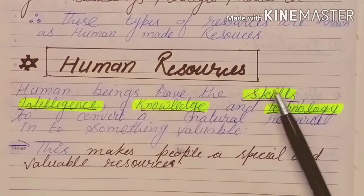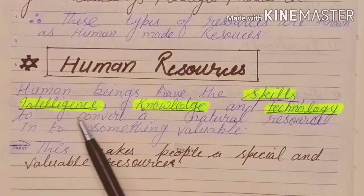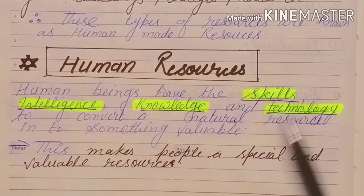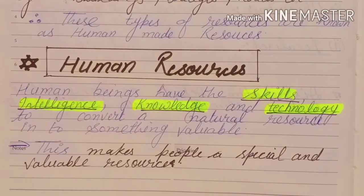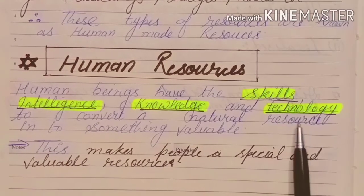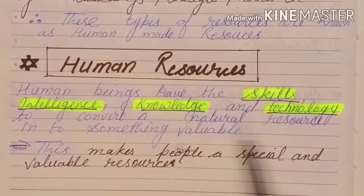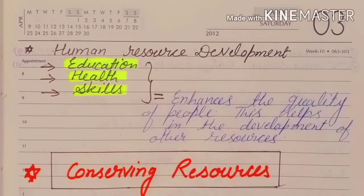For example, if people don't have skills, intelligence, knowledge, or technology, they will not be able to convert natural resources into valuable things, so they cannot qualify as a human resource. Human resources can be developed on three bases: education, health, and skills.